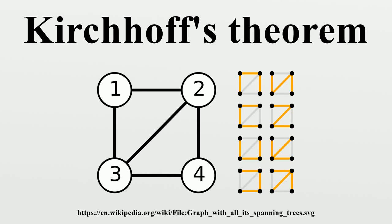In the mathematical field of graph theory, Kirchhoff's theorem, or Kirchhoff's matrix tree theorem, named after Gustav Kirchhoff, is a theorem about the number of spanning trees in a graph, showing that this number can be computed in polynomial time as the determinant of a matrix derived from the graph. Kirchhoff's theorem relies on the notion of the Laplacian matrix of a graph, which is equal to the difference between the graph's degree matrix and its adjacency matrix.